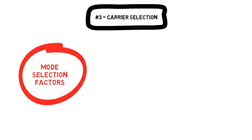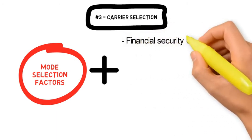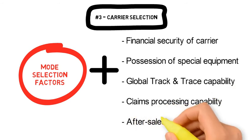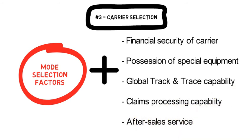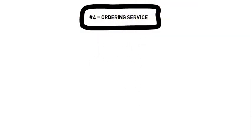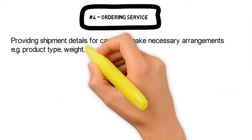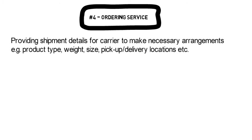For carrier selection, the same selection factors used for mode selection are considered. Some additional factors include the financial security of the carrier, possession of special equipment, global track and trace capability, claims processing capability, and after-sales service. The ordering service simply refers to the shipper providing shipment details for the carrier to make necessary arrangements — for example, product type, weight, size, pickup and delivery locations, etc.